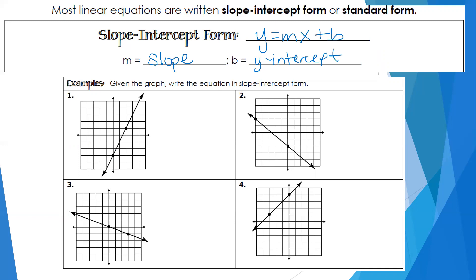In number one, we have to determine the slope. In the last class we learned how to find the slope — you can use the equation, or you can use the rise over run method. Because it's already graphed, I like to use rise over run. I start at one point: I go up four jumps and over two jumps. So my slope is four over two, which reduces to two.